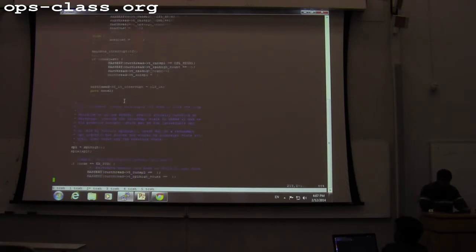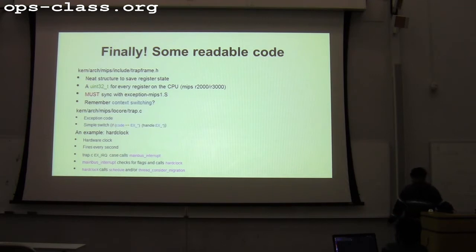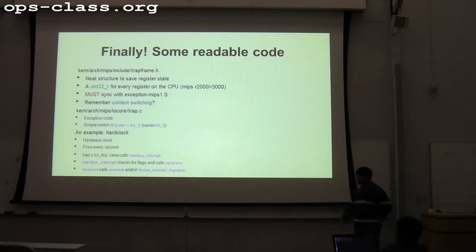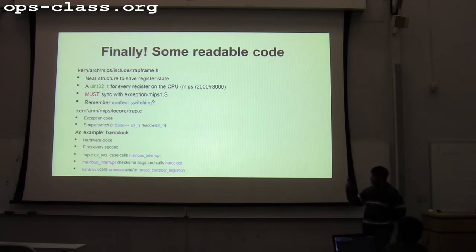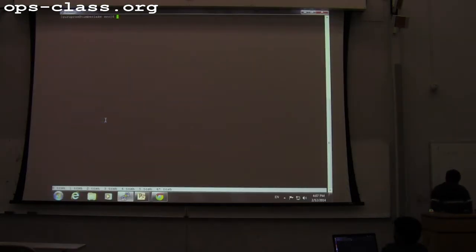System calls are handled in the same way — if it is a system call, it saves these registers and passes them on. The example I was going to talk about is the hard clock. The hard clock is basically a hardware timer that is in the Sys161 simulator that fires every second. This is a nice example because you will see how the hard clock triggers a timer interrupt that is handled by the kernel. The hardware clock is defined as part of Sys161.